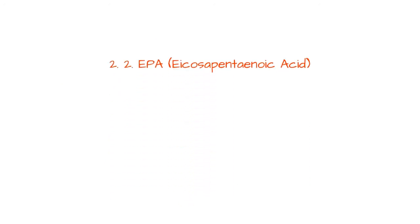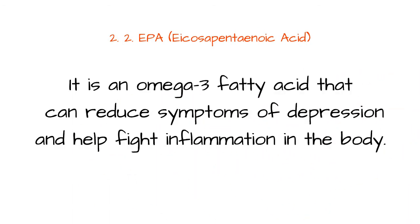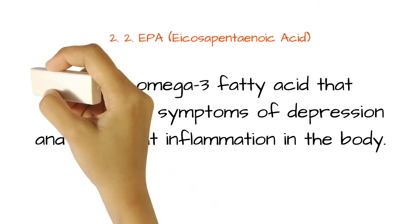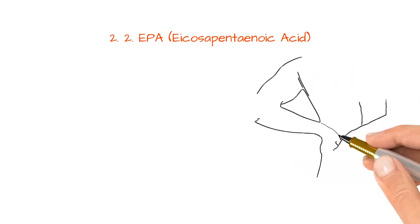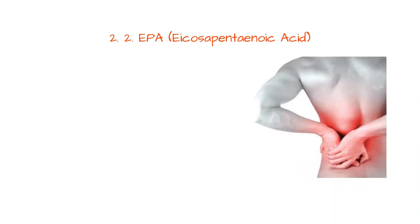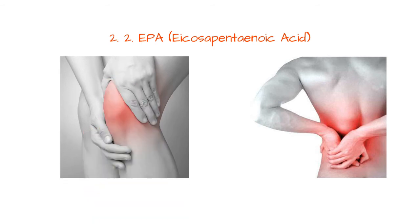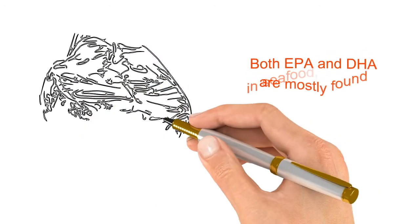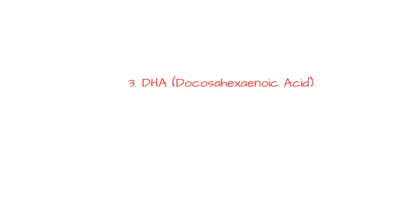The second is EPA, Eicosapentaenoic Acid. It is an omega-3 fatty acid that can reduce symptoms of depression and help fight inflammation in the body. Chronic, low-level inflammation is known to drive several common diseases. Both EPA and DHA are mostly found in seafood, including fatty fish and algae. For this reason, they are often called marine omega-3s.